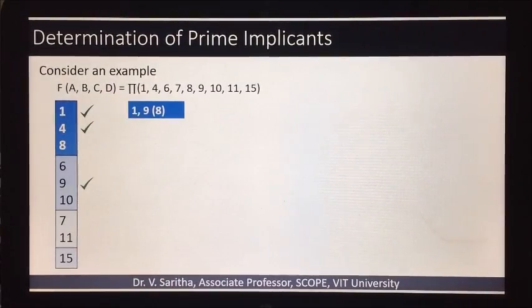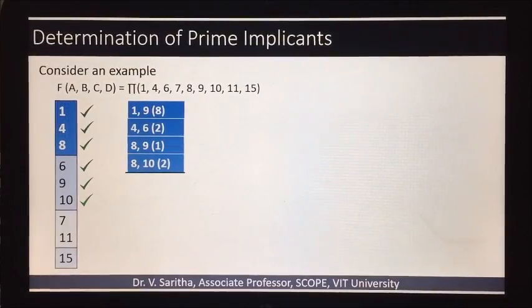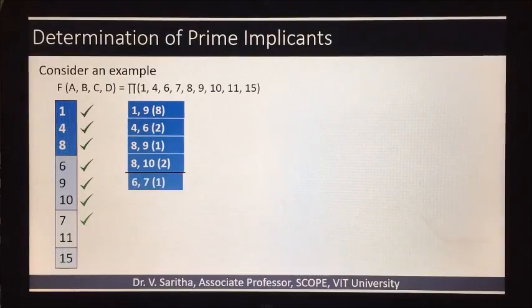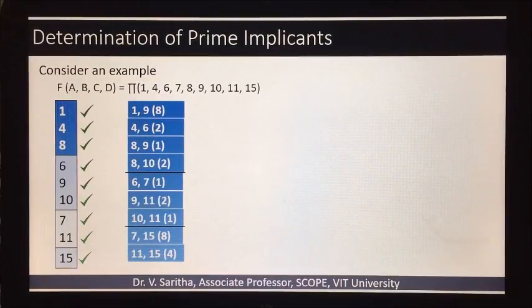One, nine difference is eight. Similarly four, six difference is two. Eight, nine is one. Eight, ten is two. Now the comparison of these two groups is done, so give a separation here. Then six, seven difference is one. Proceed until you complete the comparison of all the groups. This is done.